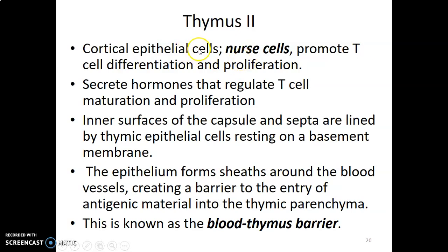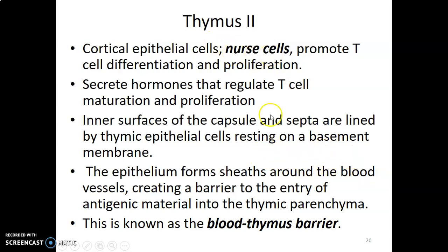Apart from T cells, the thymus also has epithelial cells called nurse cells. These nurse cells promote differentiation and proliferation of T cells, and also secrete hormones that regulate T cell maturation and proliferation. The inner surface of the capsule and septa is lined by these epithelial cells lying on a basement membrane. This epithelium is close to the epithelium of capillaries — capillaries with endothelial cells lying on a basement membrane, together with nurse cells lying on a basement membrane, form the blood-thymus barrier.